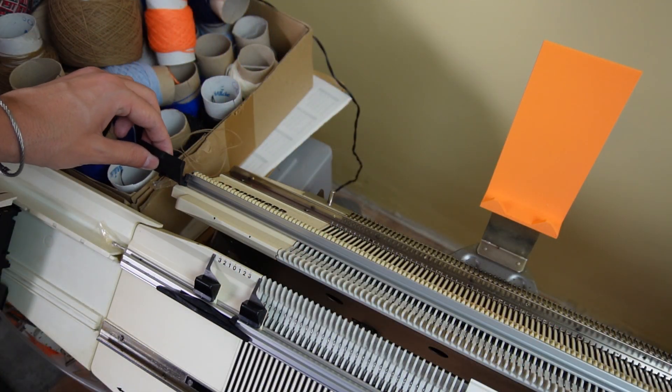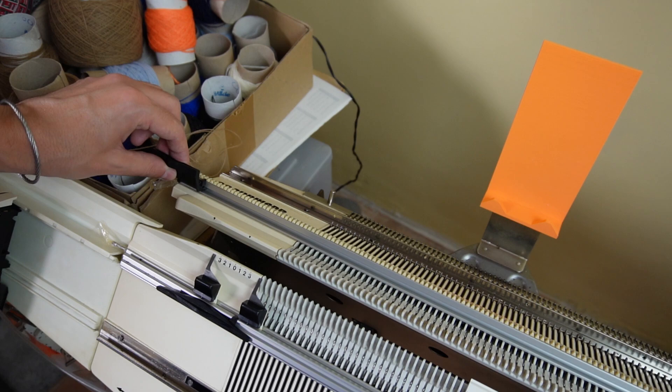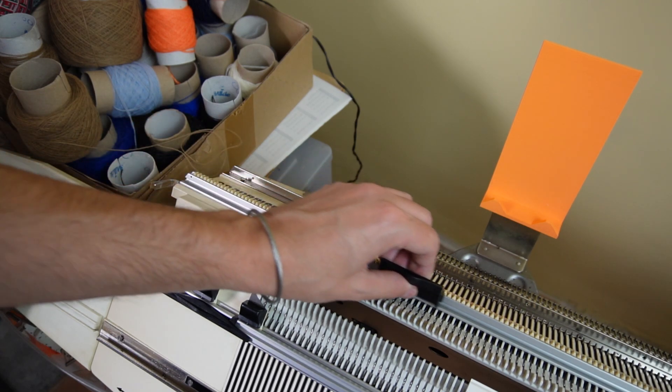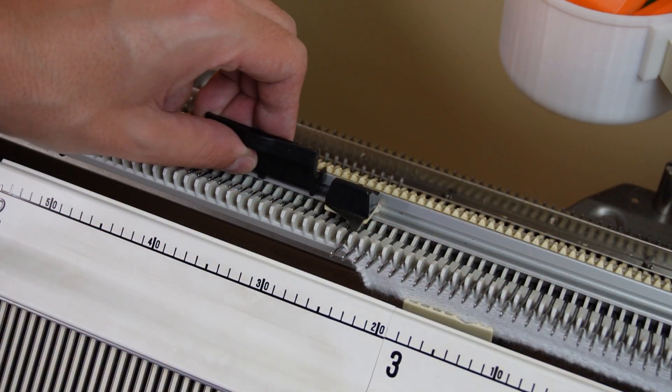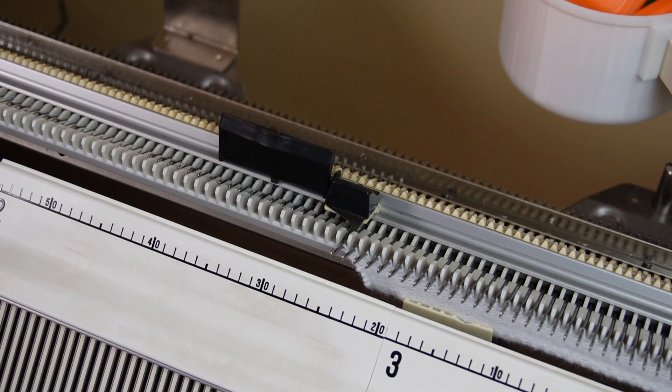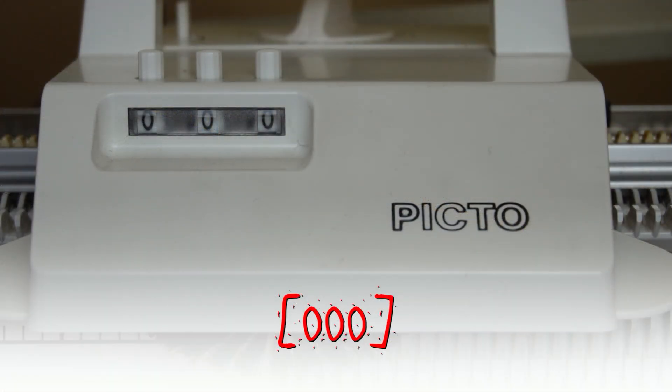Take the trip cam for the row counter, insert it into the rail and bring it next to the left edge spring on the back bed. Reset the row counter of the picto carriage if needed.